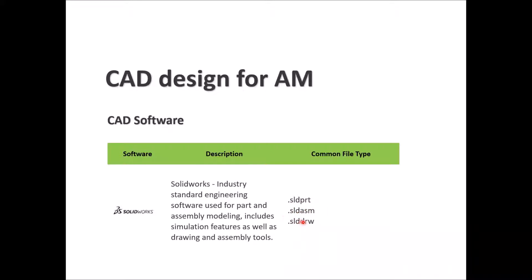For example, PRT indicates a part file, ASM an assembly, and DRW a drawing or sketch. SolidWorks is considered one of the most famous engineering packages and an industry standard for part and assembly modeling. It can provide all kinds of simulations, drawings, and assembly tools.